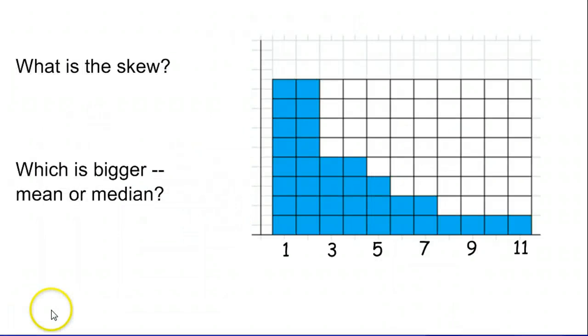Now the mean and the median. If you have a graph like this that is skewed, more data is off to in this case the left which means it is skewed to the right, what's going to be bigger? The mean or the median?